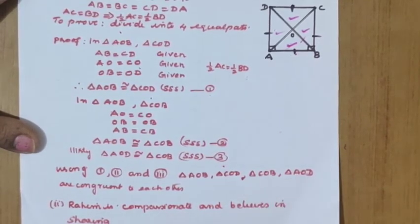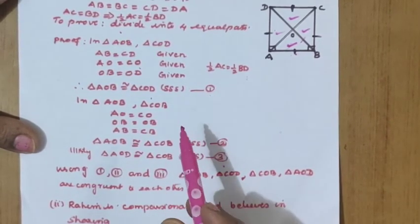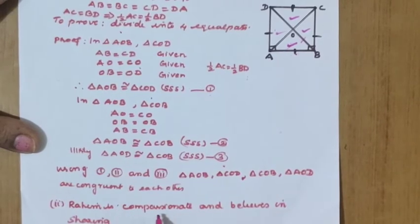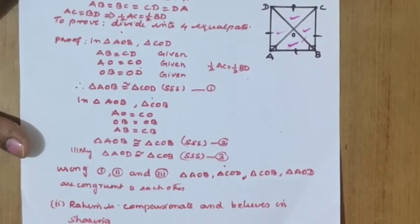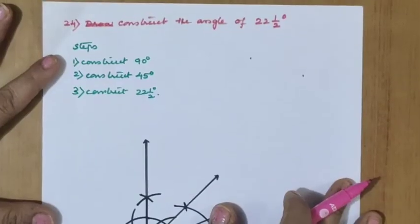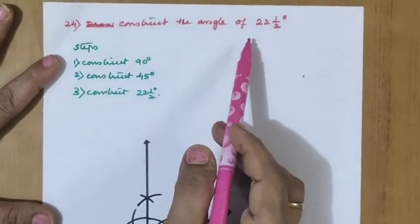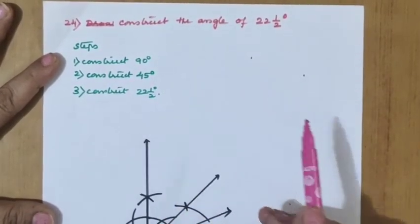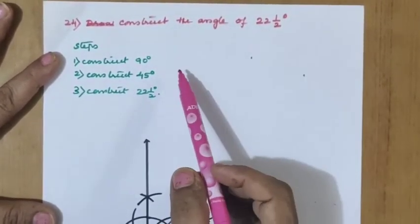The value depicted by Rahim is that he is compassionate and believes in sharing. Next question: construct an angle of 22 and a half degrees. The steps are: first construct 90°, then bisect it to get 45°, then bisect again to get 22.5°.